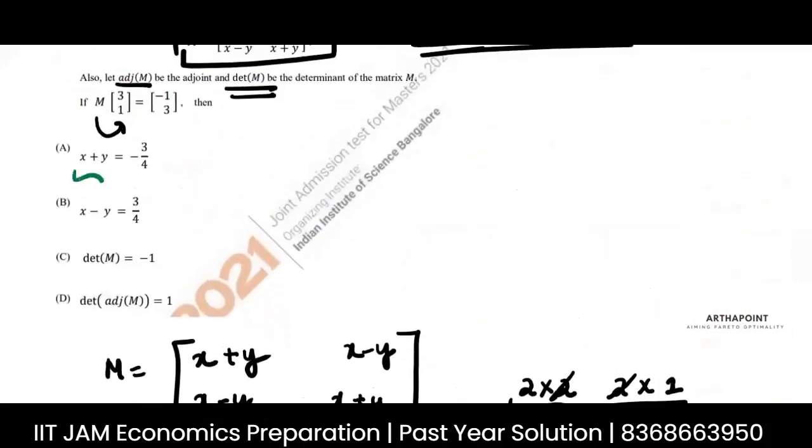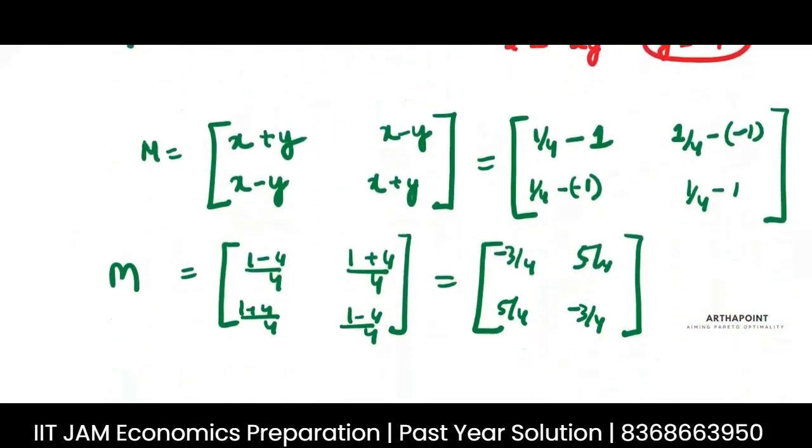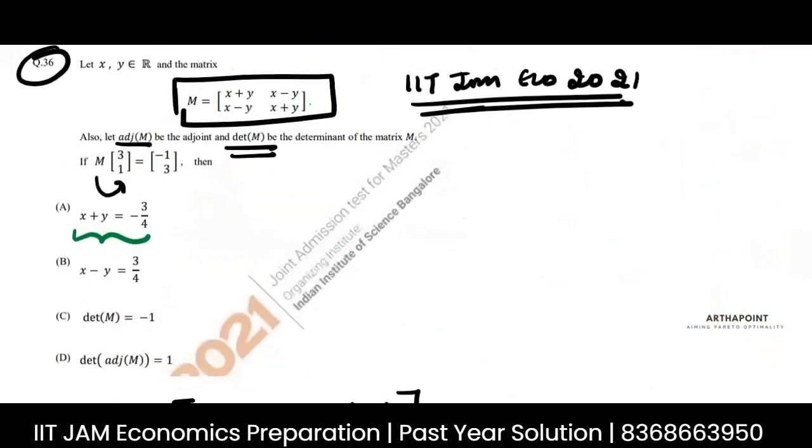Now let's see what are the options given to us. The option says X plus Y is equal to minus 3 by 4. This is correct. We just found out X plus Y and we got X plus Y as minus 3 by 4. The first option is correct. X minus Y is 3 by 4. This is incorrect. We were getting 5 by 4.